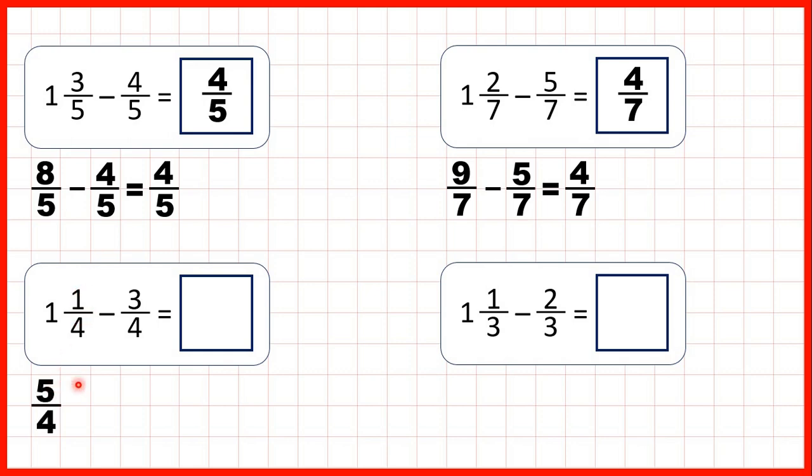So now we can subtract 3 quarters. The denominator stays the same in our answer. 5 minus 3 is 2, so that's 2 quarters.